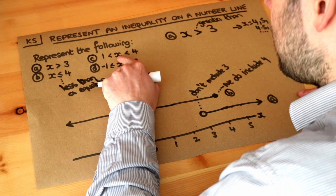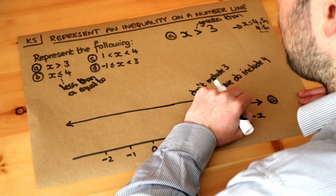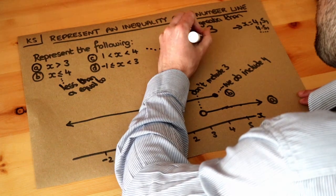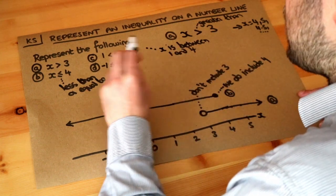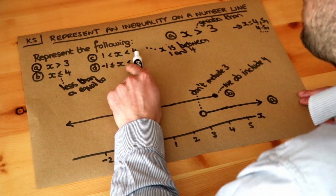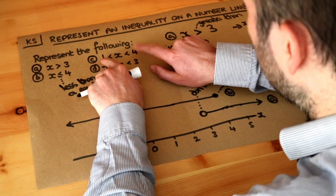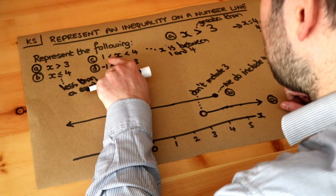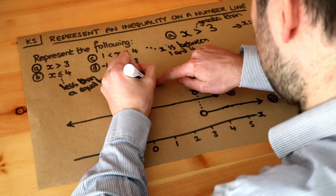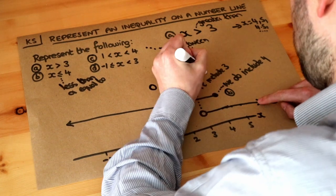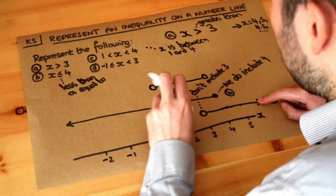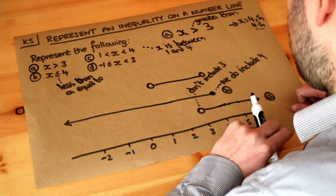For part C, x is greater than 1 and x is less than 4 — in other words, x is between 1 and 4. It doesn't include the boundary values: x can't equal 1 because x is strictly greater than 1, and x can't equal 4 because x is strictly less than 4. So we put open circles on both 1 and 4, then draw a line between them to show x can be any value in between, but not including 1 or 4.